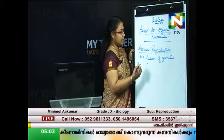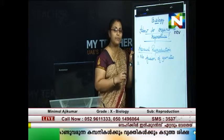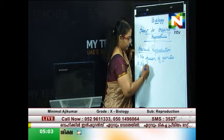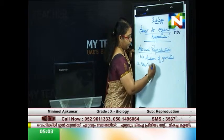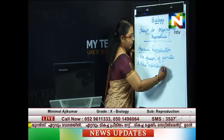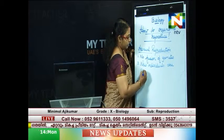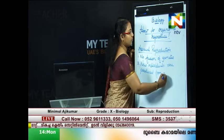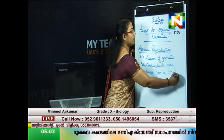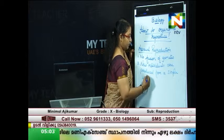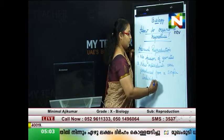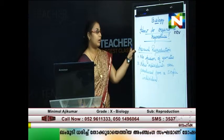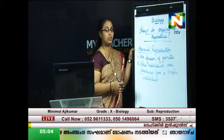The second characteristic is that offspring are produced from a single individual. These are the characteristics of asexual reproduction. Now we have to discuss the different modes of asexual reproduction.